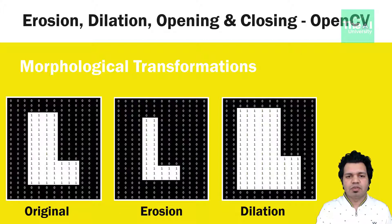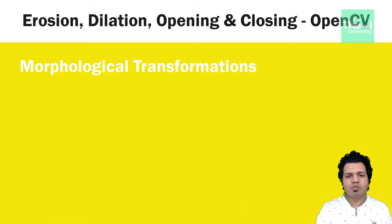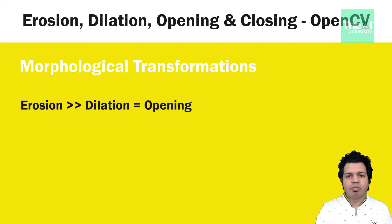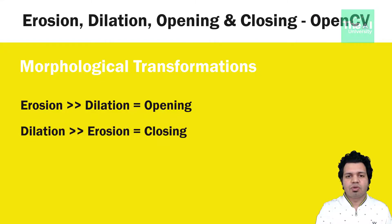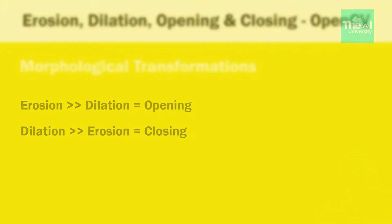If you have an image from which you want to remove noise, you can first apply erosion followed by dilation, because erosion removes white noise but also shrinks the object — so we dilate afterward to preserve the original image. This is also useful for joining broken parts of an object. Opening is erosion followed by dilation; closing is the opposite — dilation followed by erosion.